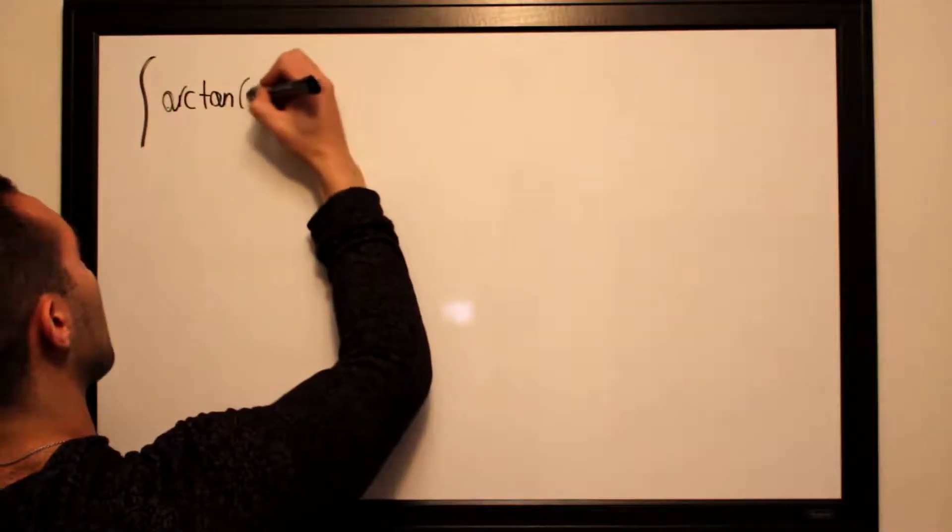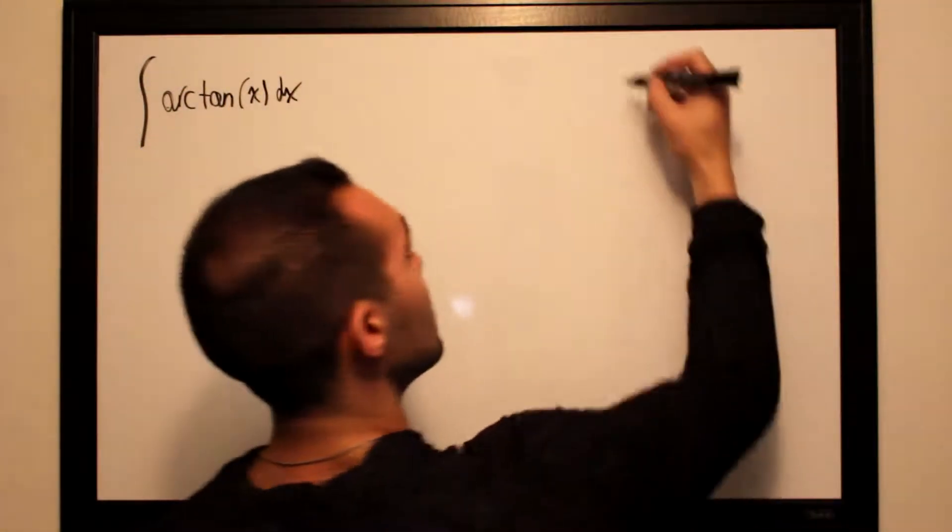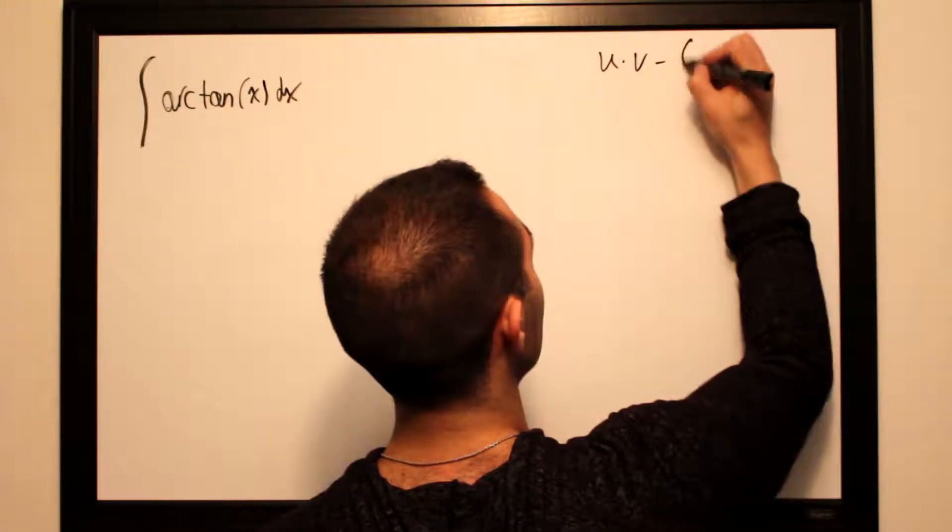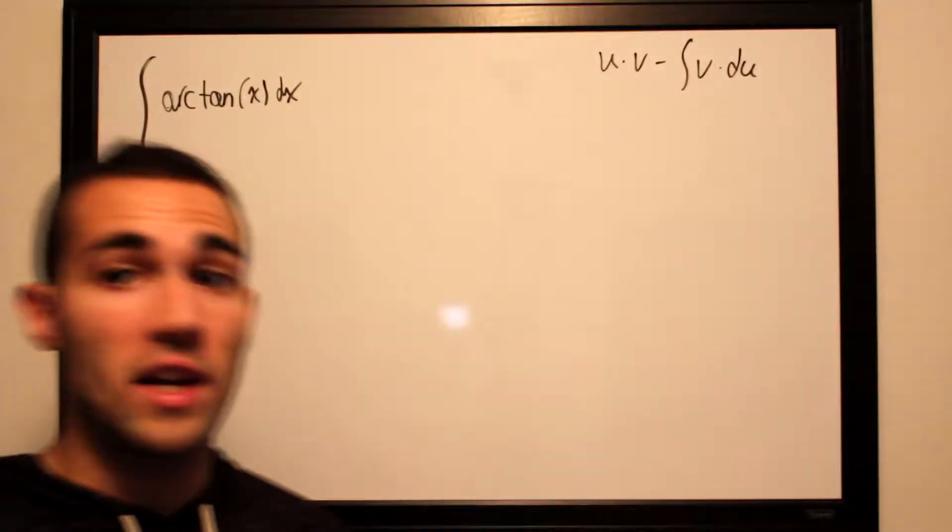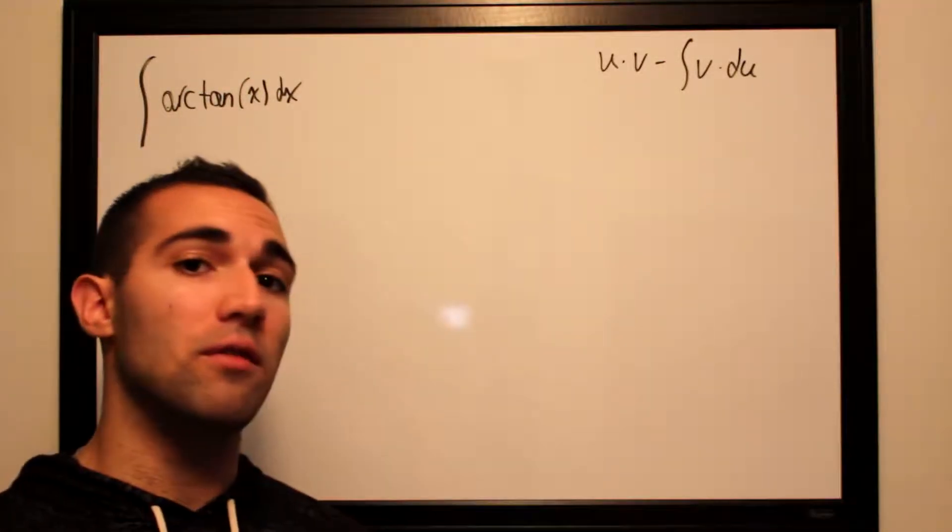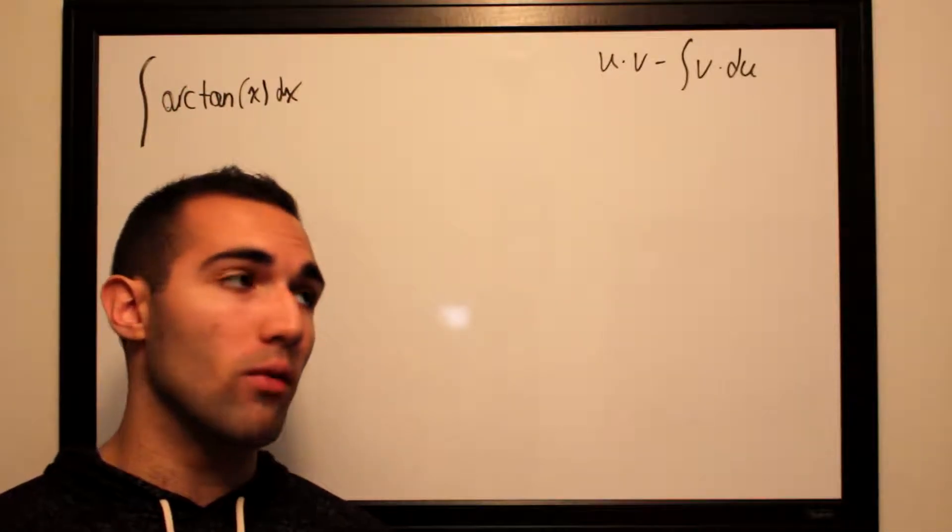The integral of arctan x dx using integration by parts is u times v minus the integral of v times du, where u is any easily differentiable function and v is essentially where you cover up your u and integrate whatever is left.